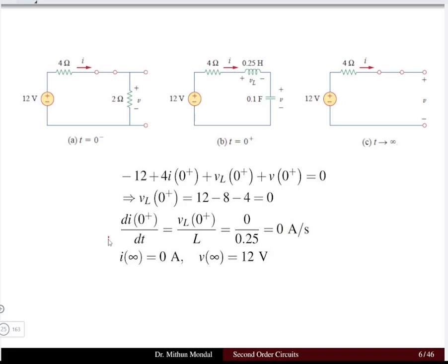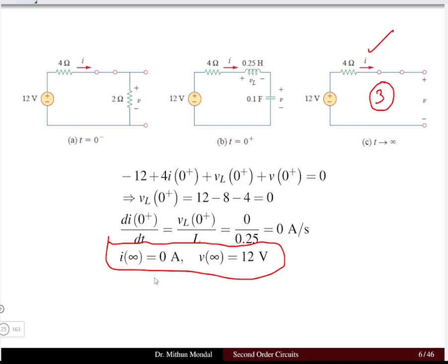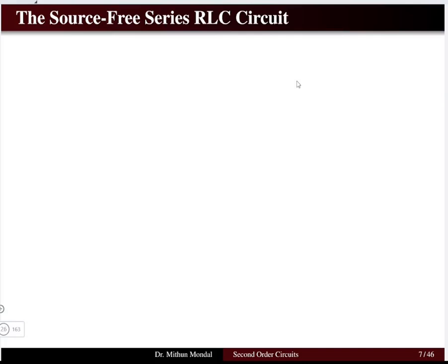At t = ∞, the inductor is short-circuited and capacitor is open-circuited. The current flowing is 0 amperes (no path through open circuit), and the capacitor voltage becomes 12 volts, equal to the source voltage. These initial and final values are very important for finding the boundary conditions in the differential equation.